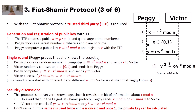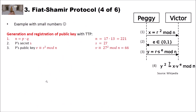To make this more concrete, here is an example with small numbers. For generating and registering the public key, the trusted third party computes n as the product of two prime numbers — in our case 17 and 13 — giving n equals 221 as the modulus. Peggy chooses secret s equal to 27, then computes her public key v as 27 squared modulo 221, which equals 66. So 66 is her public key and 27 is her private key.